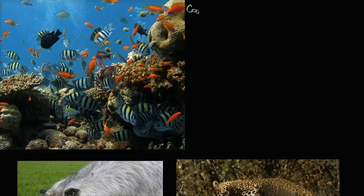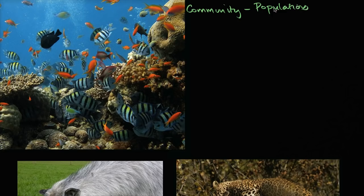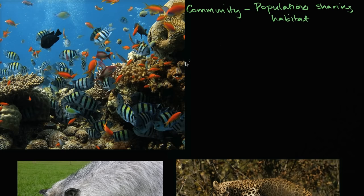In the introduction to ecology, we introduced the idea of a community, which is all different populations that are in the same habitat, sharing the same area. Populations sharing a habitat. And in particular, in this video, we're going to focus on the interactions between those populations — the interactions between different species. The technical term for that is inter-specific interactions.